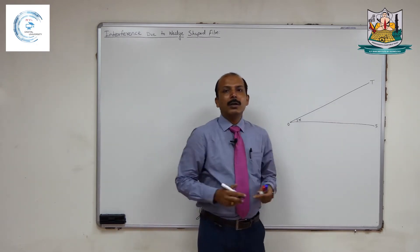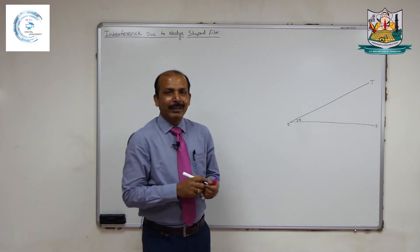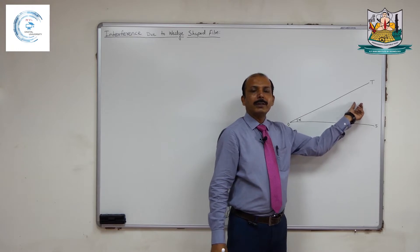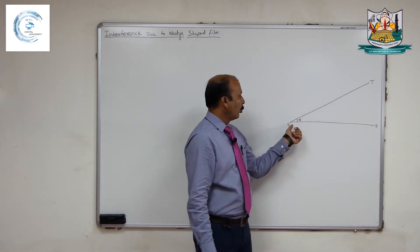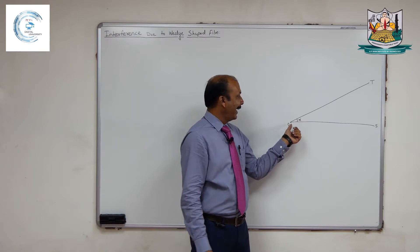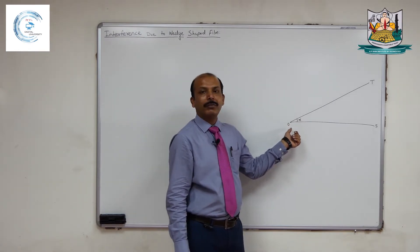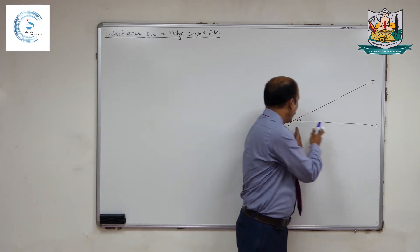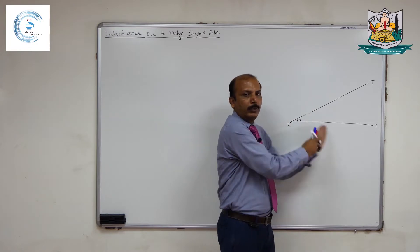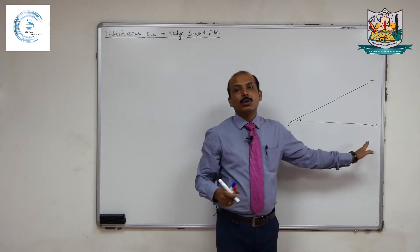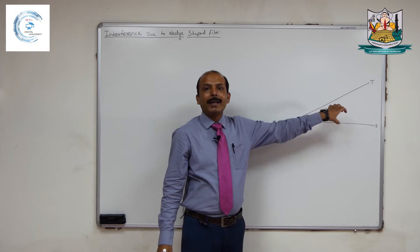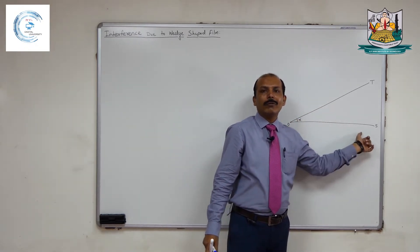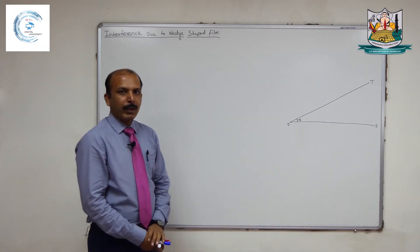The wedge angle alpha is very small, as only a small hair or thread is introduced between the two glass plates. Point O is called the edge of the wedge, or point of contact, where the thickness of the film is zero. The thickness goes on increasing as we move away from the point of contact — it is not uniform; it varies continuously.